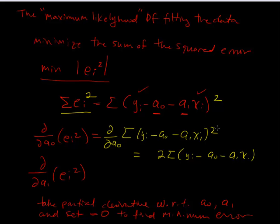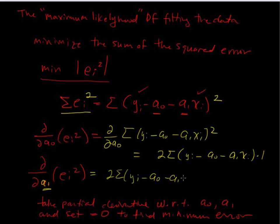When we take this, we bring the exponent down and use the chain rule, taking the derivative of what's inside. Since we're taking the partial with respect to A0, it's just a constant multiplied by one. We can do the same thing for the partial with respect to A1 — we bring the two down again and get two times the sum of (Yi minus A0 minus A1·xi), and this time since we have the xi term, taking the partial with respect to A1 gives us xi out front.